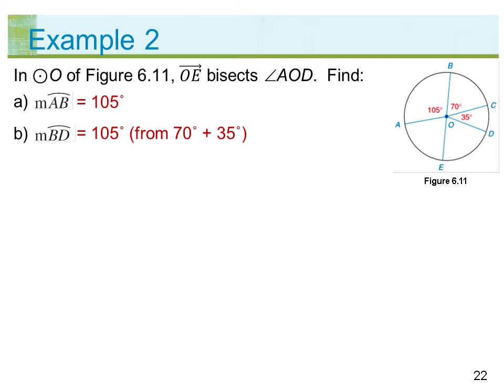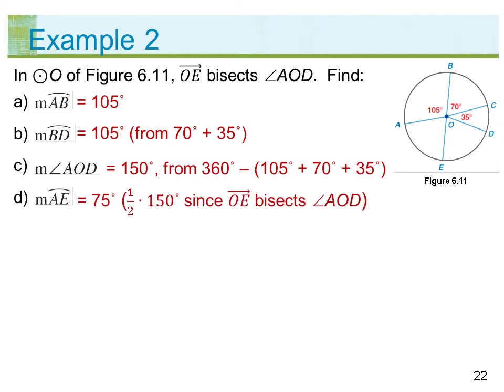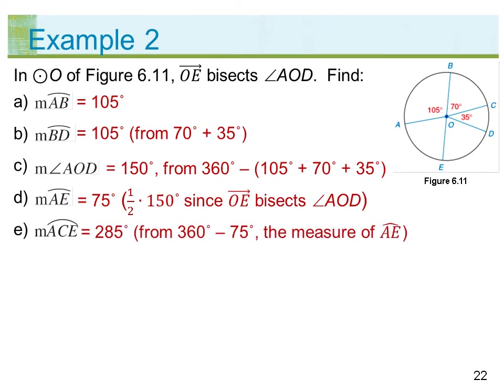Arc BD comes from 70 degrees plus 35 degrees. C) measure of angle AOD — 150 degrees, from 360 degrees minus the sum of 105, 70, and 35 degrees. D) measure of arc AE — 75 degrees, which is half of 150 degrees since ray OE bisects angle AOD. E) measure of arc ACE — 285 degrees, from 360 degrees minus 75 degrees (the measure of arc AE).